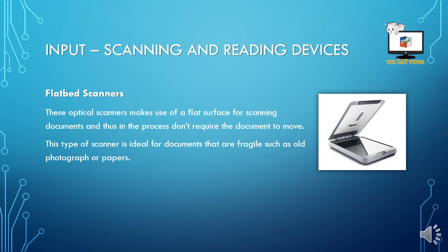Input scanning and reading devices. Flatbed scanners — exactly as the name suggests — are flat and sit still. They are ideal for images and materials you don't really want to damage or move around too much, like old photographs. This would be ideal for fragile materials that you want to photocopy or scan.